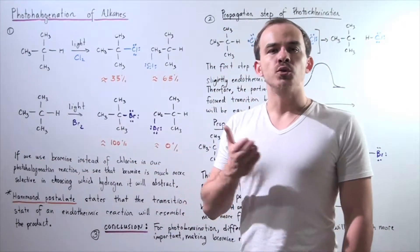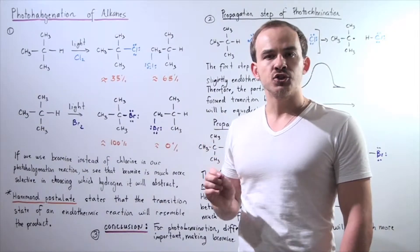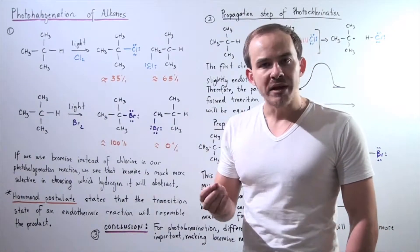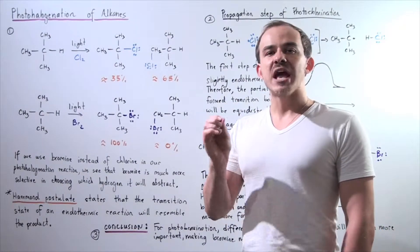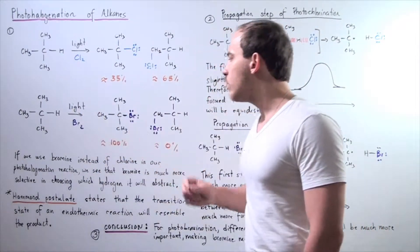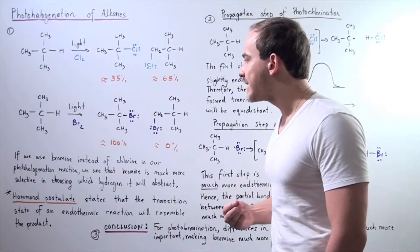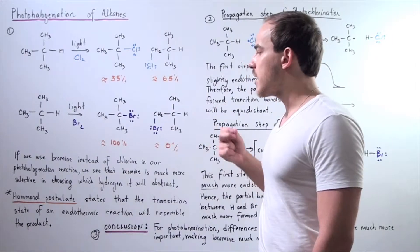Once again, if we use bromine instead of chlorine in our photohalogenation reaction, our bromine will be much more selective in choosing which H atom it decides to abstract. So, the bromine will be more likely to abstract our tertiary H than our primary H.